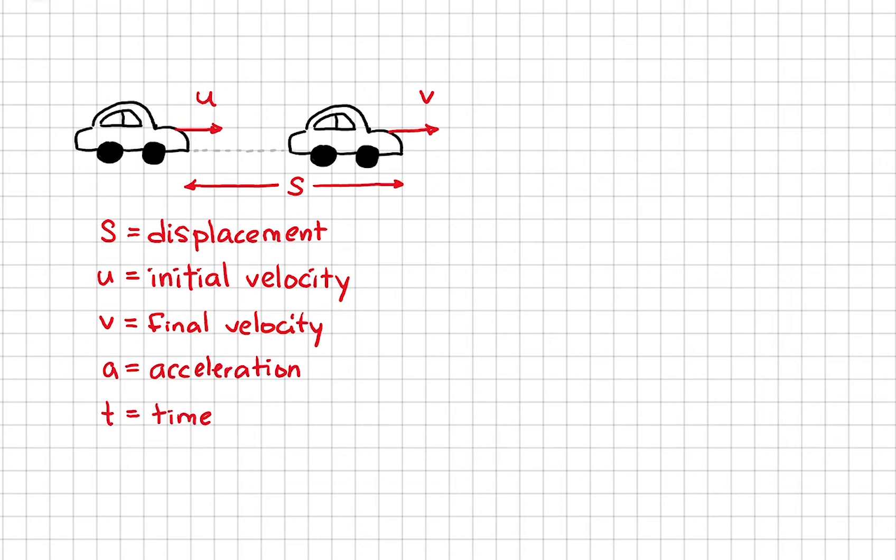These variables are related by Newton's equations of motion, and there are four of them. Number one: the final velocity is equal to the initial velocity plus the acceleration times time. This makes a lot of sense because this here is the gain in velocity. Another one is v squared is u squared plus 2as.